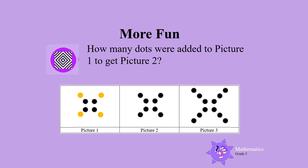How many dots were added to picture one to get picture two? Can you see that if we add four dots to picture one, you will get picture two? So, four dots were added to picture one.